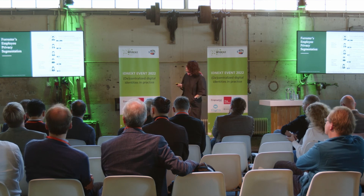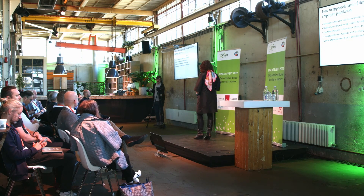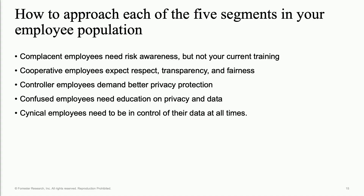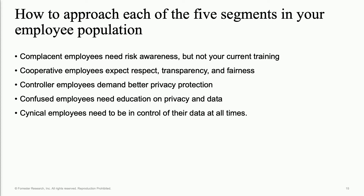Let's talk about what to do with employees in each of these five segments. For complacent employees, it may be tempting to say that if you have a large base of complacent employees you can do whatever you want — but these folks will only remain complacent if nothing bad happens. It would behoove you to do some up-leveling of their risk awareness so they become more aware of risks and understand what behaviors they can use to protect themselves, so you don't have an adverse event and then they lose trust in you as an employer and end up in the cynical segment.